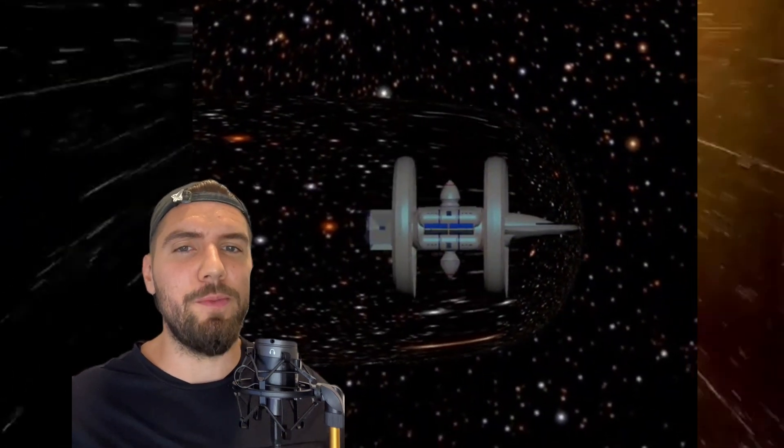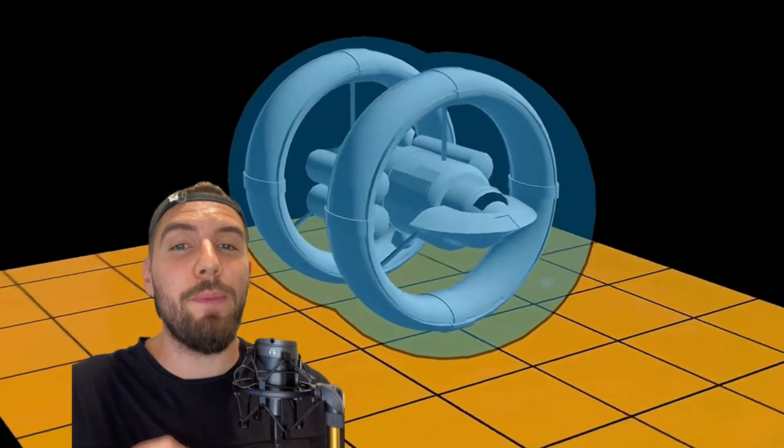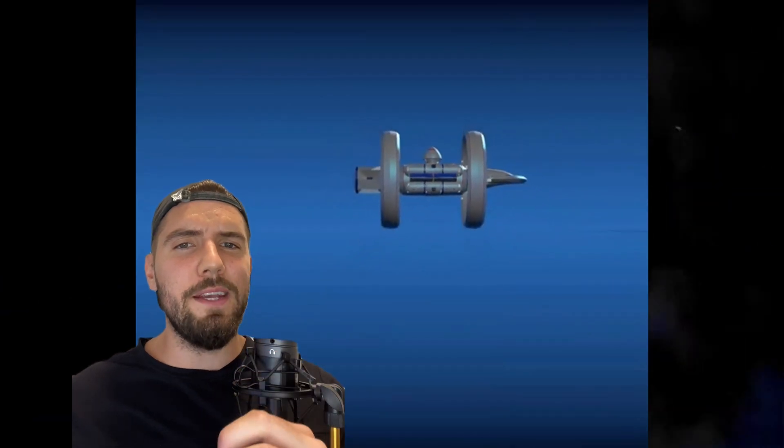The warp drive doesn't actually move at all. The actual fabric of space-time moves around it. Any spaceship equipped with this warp drive would be encased by a large ring that would compress space-time in front of the ship, which is just the physical fabric of space that our reality exists in, and expand space-time behind it.